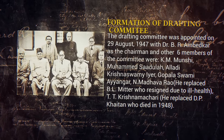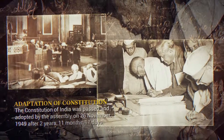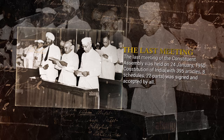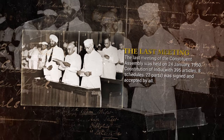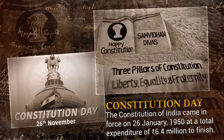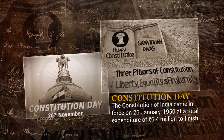The drafting committee was appointed on 29th August 1947 with Dr. B.R. Ambedkar as the chairman. Their hard work and immense dedication towards their work led the way towards the formation of the Indian Constitution. The Constitution of India was passed and adopted by the Assembly on 26th November 1949, after 2 years, 11 months, and 17 days.